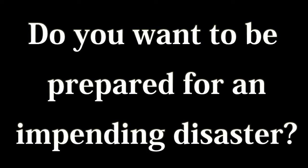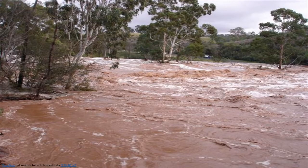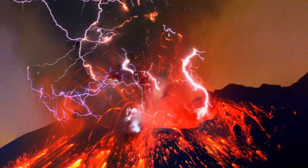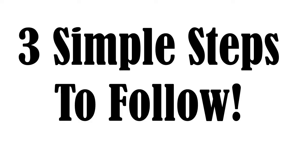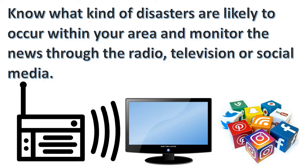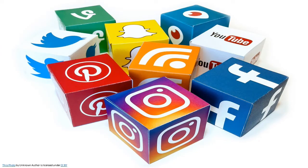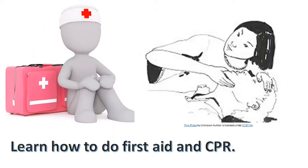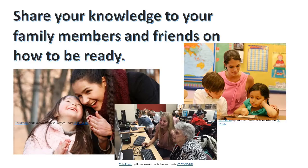Want to be prepared for an impending disaster? Floods, earthquakes, and volcanic eruptions are only a few of the possible disasters which may hit our country anytime. Here are three simple steps you need to follow. Step 1: Be informed. Learn what you need to know to keep your family safe. Know what kind of disasters are likely to occur within your area and monitor the news through the radio, television, and social media. Learn how to do first aid and CPR. Share your knowledge with your family members and friends on how to be ready.